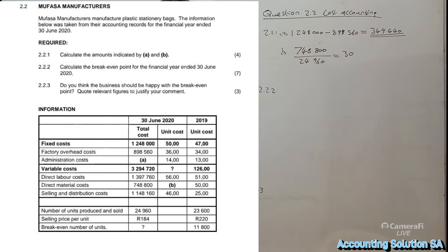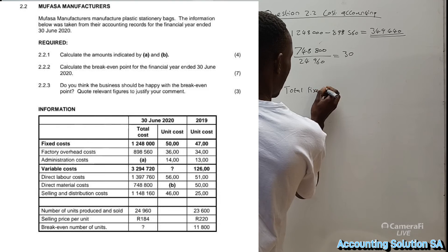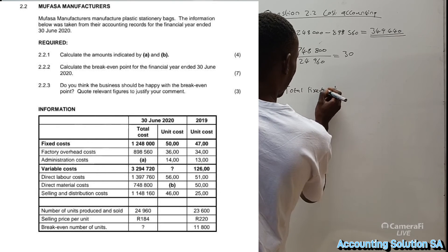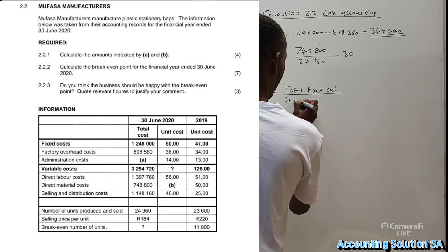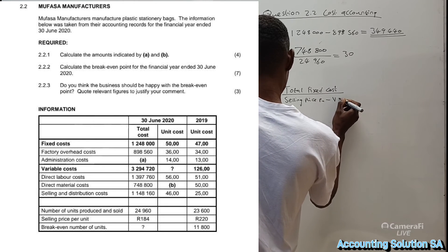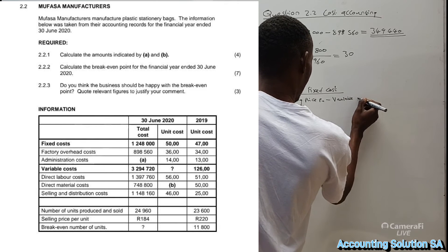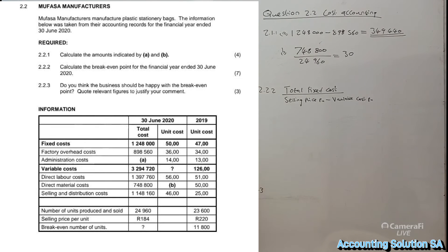Question 2.2.2: calculate the break-even point for the financial year ended 30 June 2020. First, you must identify the formula. The formula is total fixed cost divided by selling price per unit minus variable cost per unit. This will give you break-even point in units.